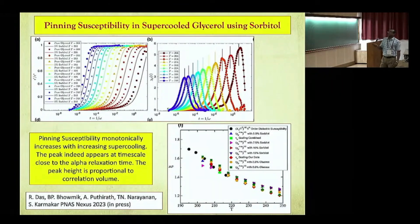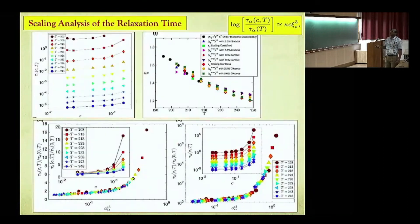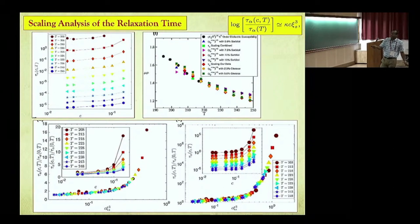The black circles are data computed from fifth-order nonlinear susceptibility — the 2015 Science paper — and this is in remarkable agreement with those results. The story doesn't end there: I can recheck whether I get the same correlation if I look at the relaxation time, which is independent of this analysis. The relaxation time data as a function of sorbitol concentration at various temperatures: by scaling the y-axis using the static length scale or static correlation volume, I can collapse all the data including pure glycerol and various amounts of sorbitol.